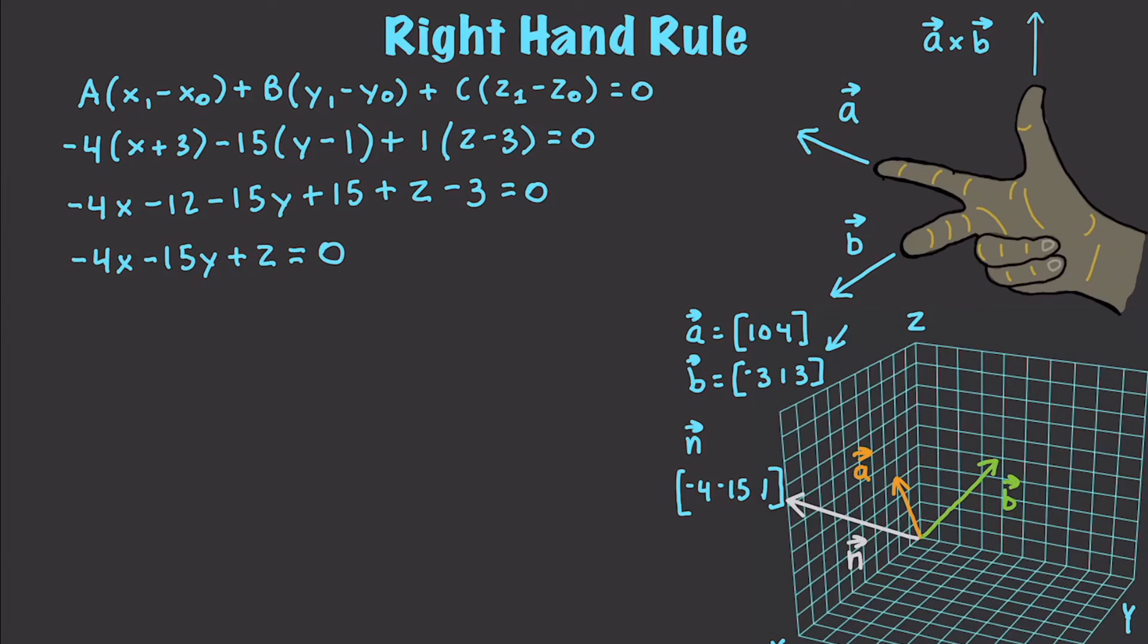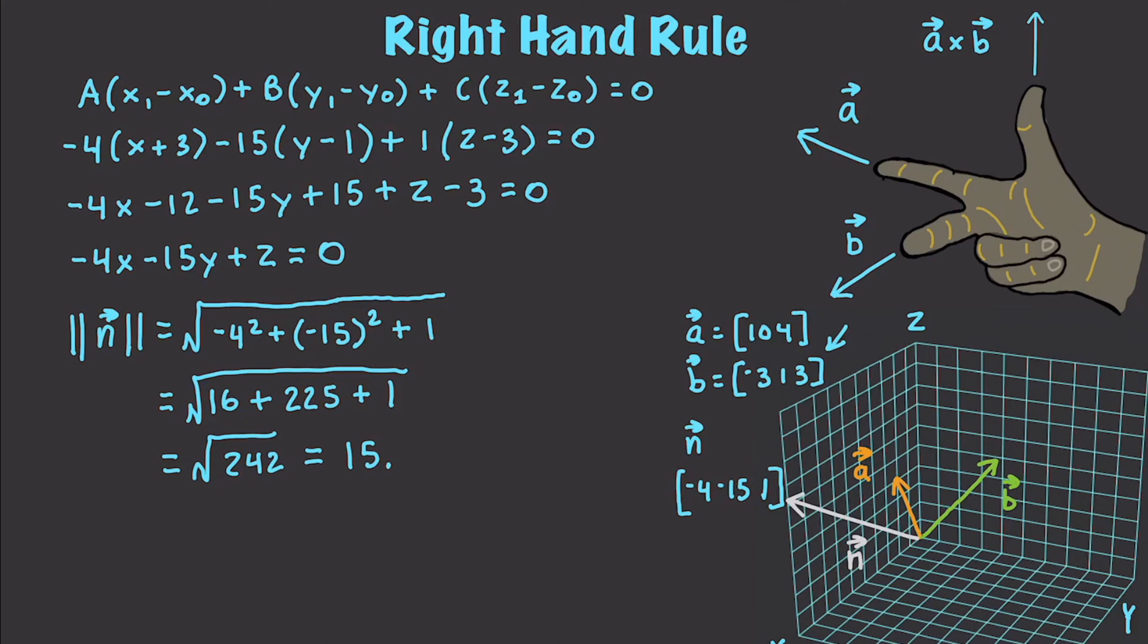And the last thing we could do here is we could calculate the magnitude of our normal here which is going to end up being equal to square root of (negative 4 squared plus negative 15 squared plus 1 squared). So, we'll just leave it 1 which of course is going to be 16 plus 225 plus 1, square root of that, square root of 242 which is approximately equal to 15.55. Alright. So, there you go. Cross product, right hand rule, drawing in planes and doing all kinds of other crazy stuff.